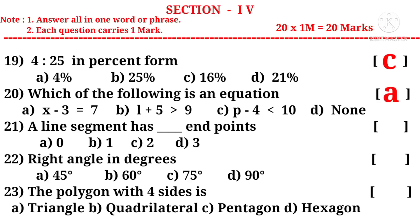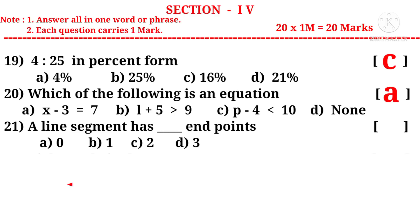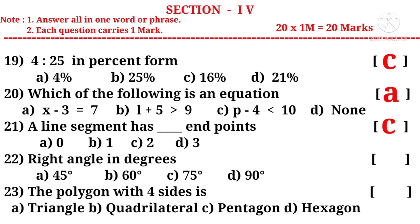Now let us take 20: Which of the following is an equation? An algebraic expression which has equal to symbol is called an equation. So the correct choice is A. Now 21: A line segment has dash endpoints. For this draw a line and take any two points A and B. Now cut the line on either side. Then we get the line segment AB. And here point A and point B are the endpoints of the line segments. So there are two. So the correct choice is C. 22: Right angle in degrees. Right angle is in L shape. So it is in 90 degrees. So the correct choice is D. 23: The polygon with 4 sides is. 4 sides can be termed as quadrilateral. So the correct choice is B.